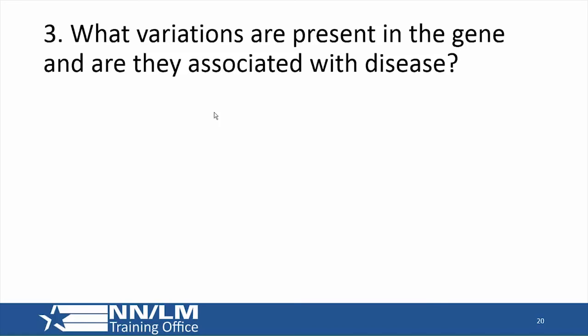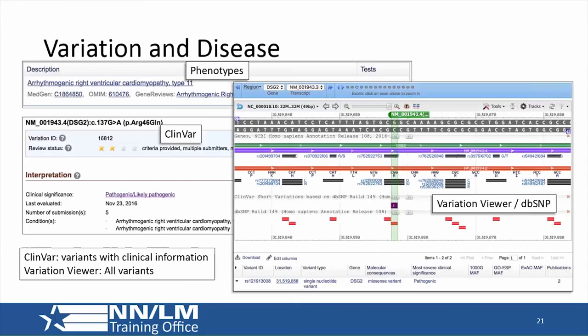The next question is about variation — Peter Cooper will continue. There are two parts of the gene record to look at for variation and disease: the phenotype section, which links out to MedGen and OMIM, and the ClinVar section, which links to medically important variants in the ClinVar database. There's also the Variation Viewer tool, which lets you see all variants in one place — those in ClinVar and those in the generic variation database called dbSNP.